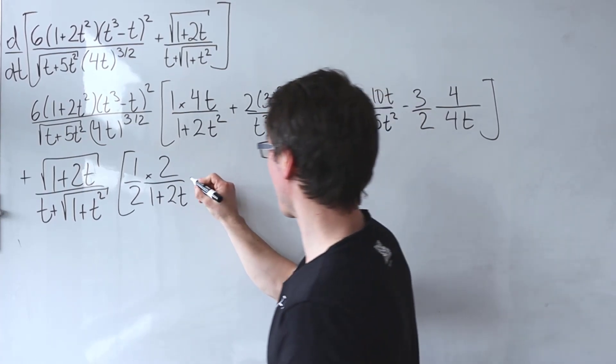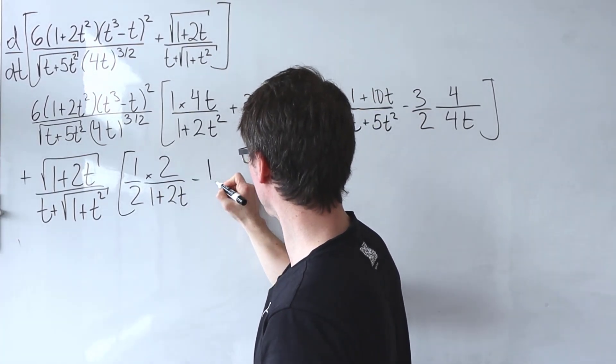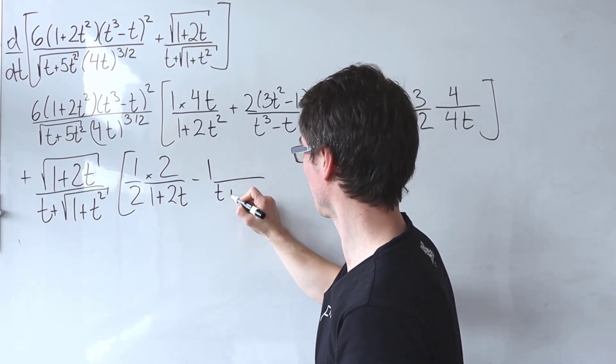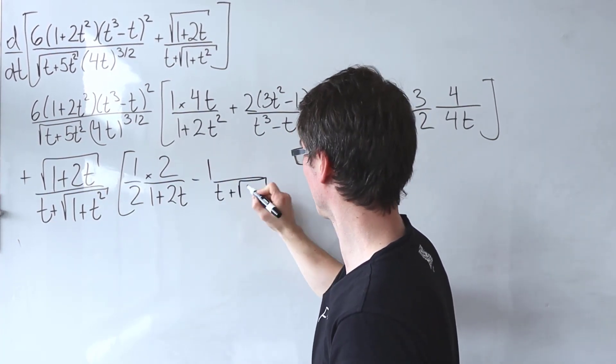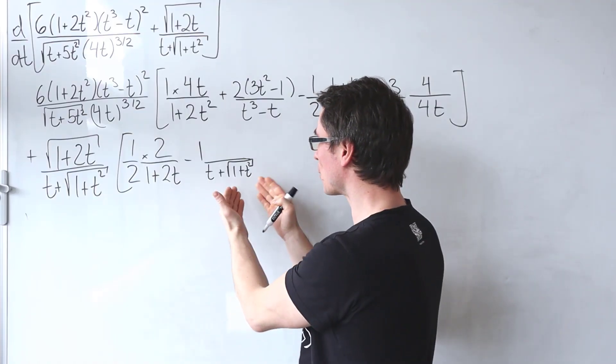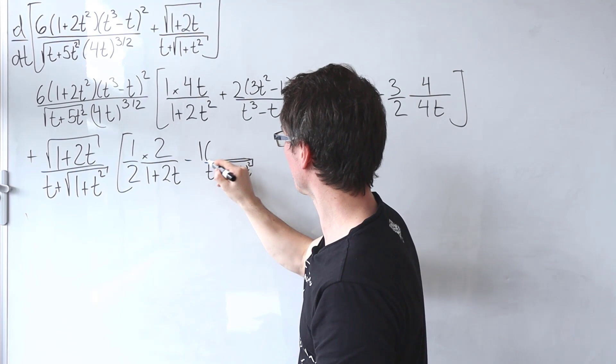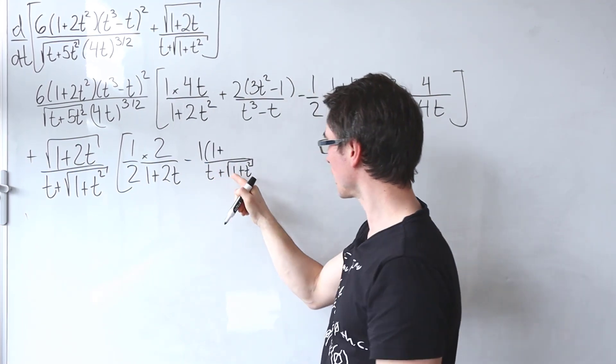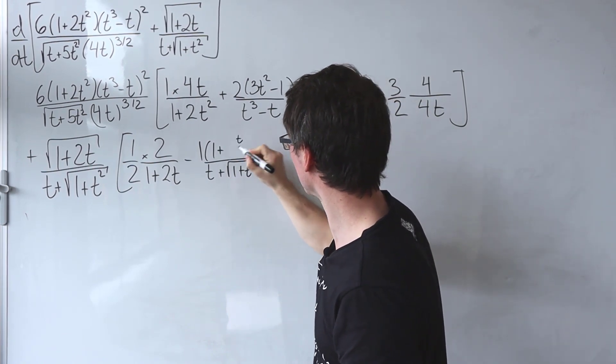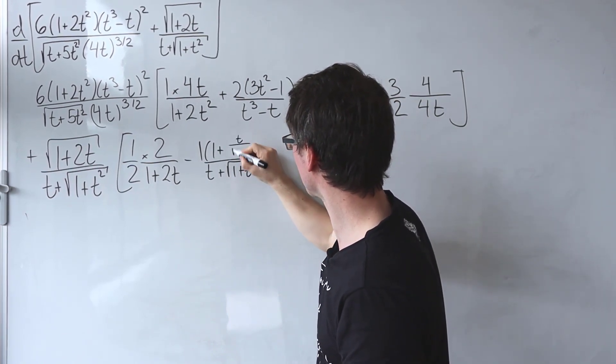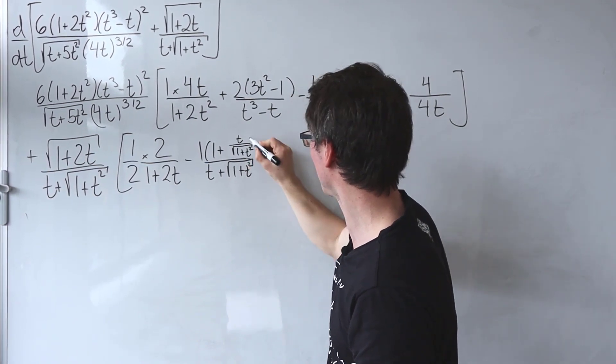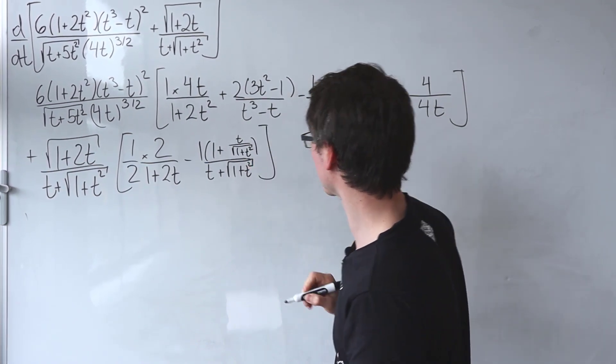For the next one, we're going to have a power of minus 1. Then we're going to be dividing by the original expression, which is going to be t plus the square root of 1 plus t squared. The derivative of the denominator will just be a sum, which will be equal to 1 plus, and then the derivative of the square root of 1 plus t squared is just going to be equal to t divided by the square root of 1 plus t squared. Then we can close the brackets.